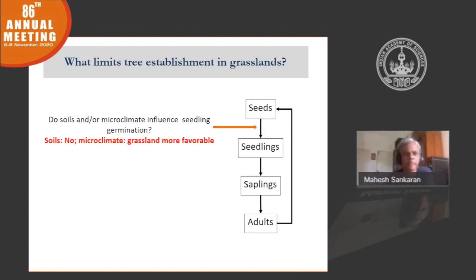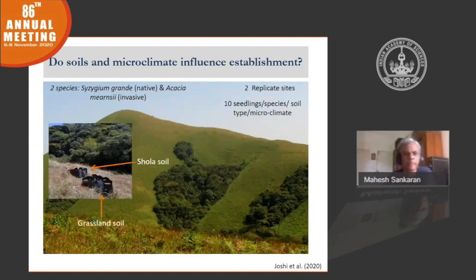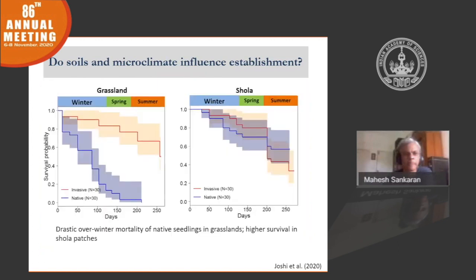We then asked: what happens between the seedling and the sapling transition? All the seedlings that survived were transferred into larger bags placed in both the forest and the grasslands, and we followed them over time. These graphs show survival of the native and the invasive species in the grassland sites and in the shola sites. In the grassland, the invasive species survives quite well — about 70 to 80% survive the winter into next summer. But the native species shows a precipitous decline with huge over-winter mortality, and most are dead by spring. Whereas inside the forest patches, both native and invasive species survive quite well, with the native actually doing better than the invasive.